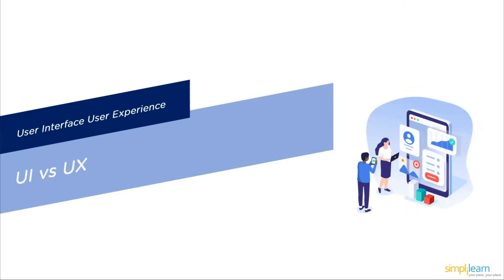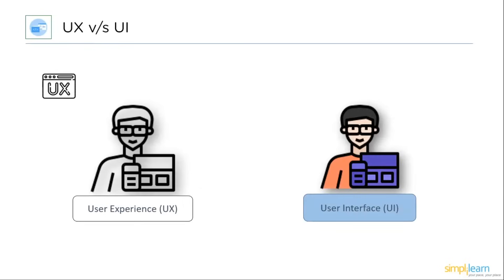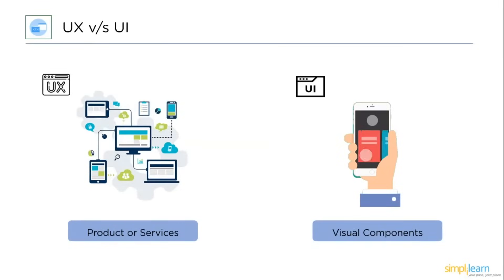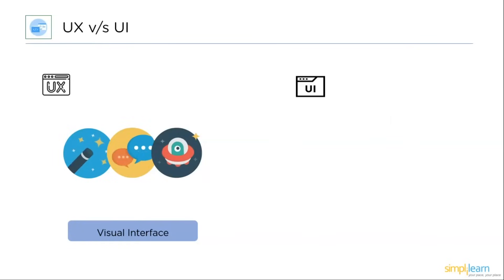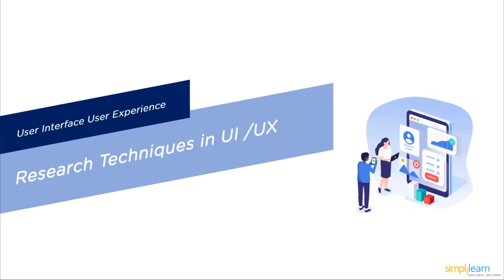Two terms commonly mixed up in web and application design are UX design and UI design. User experience relates to the user's overall experience of the product or service, whereas UI refers to the visual components through which humans connect with a product. UX focuses on the user and their experience with the product, while UI focuses on visual interface elements like fonts, colors, menu bars, and much more.